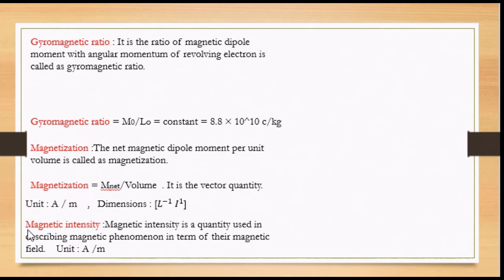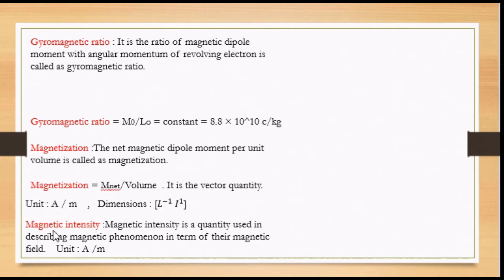After that, Magnetic Intensity is denoted by H. The Magnetic Intensity is a quantity used in describing magnetic phenomena in terms of their magnetic field. To describe the magnetic field, it is called as the Magnetic Intensity, and its unit is Ampere per meter.